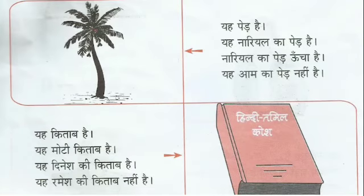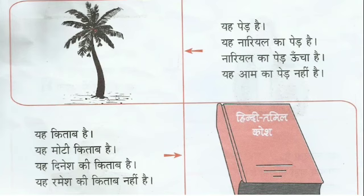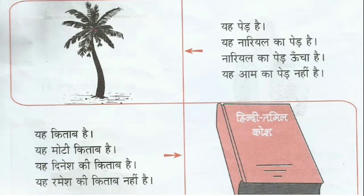See the next picture. Paid means tree. Yeh Paid Hai — this is a tree. Yeh Nariyal Ka Paid Hai — this is a coconut tree. Nariyal means coconut. Nariyal Ka Paid means coconut tree. Yeh Aam Ka Paid Nahi Hai — this is not a mango tree. This is Nariyal Ka Paid — coconut tree.